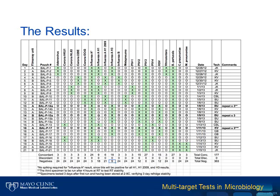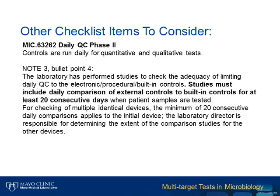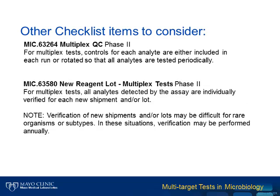Other checklist items to consider from the CAP checklist include the following. For a single cartridge or pouch type of setup, daily internal controls can be relied upon after the following study has occurred: external controls are compared to built-in controls for at least 20 consecutive days. By spreading our validation over three weeks, we met the 20-day requirement. If the multi-target assay is a plate type of setup, then multiple run controls may be necessary. If so, those should be rotated among all the analytes periodically.